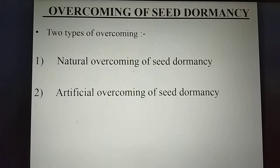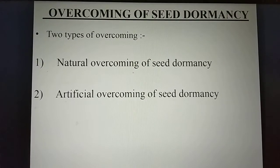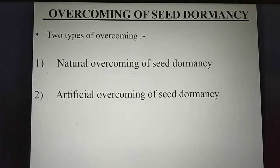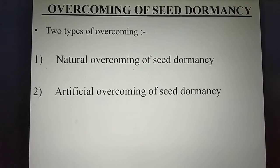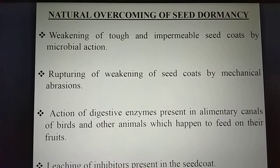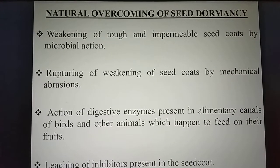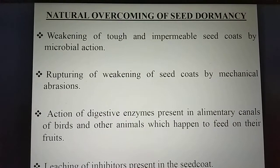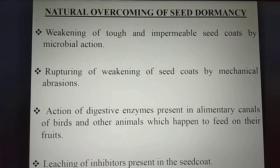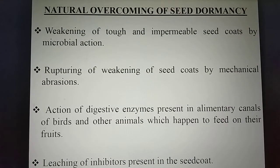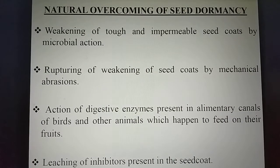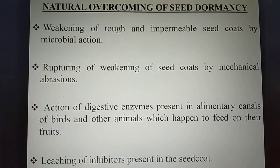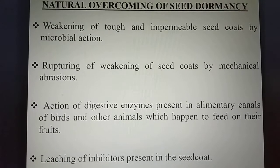There are two types of overcoming seed dormancy. Number 1: Natural overcoming of seed dormancy. Number 2: Artificial overcoming of seed dormancy. Natural overcoming includes: weakening of tough and impermeable seed coats by microbial action; rupturing or weakening of seed coats by mechanical abrasions; and action of digestive enzymes present in the alimentary canal of birds and other animals which happen to feed on their fruits.